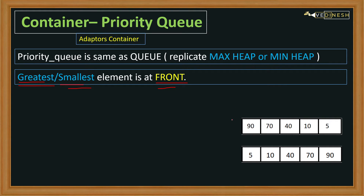We can take an example of this. This is a replication of max heap in which the root element or the front is having the highest element, and the min heap is replicated by a priority queue in which we have the smallest element in the front. So whenever we try to pop an element from the priority queue, we are going to get either the greatest or the smallest element among all. We can make our priority queue in either of these conditions.